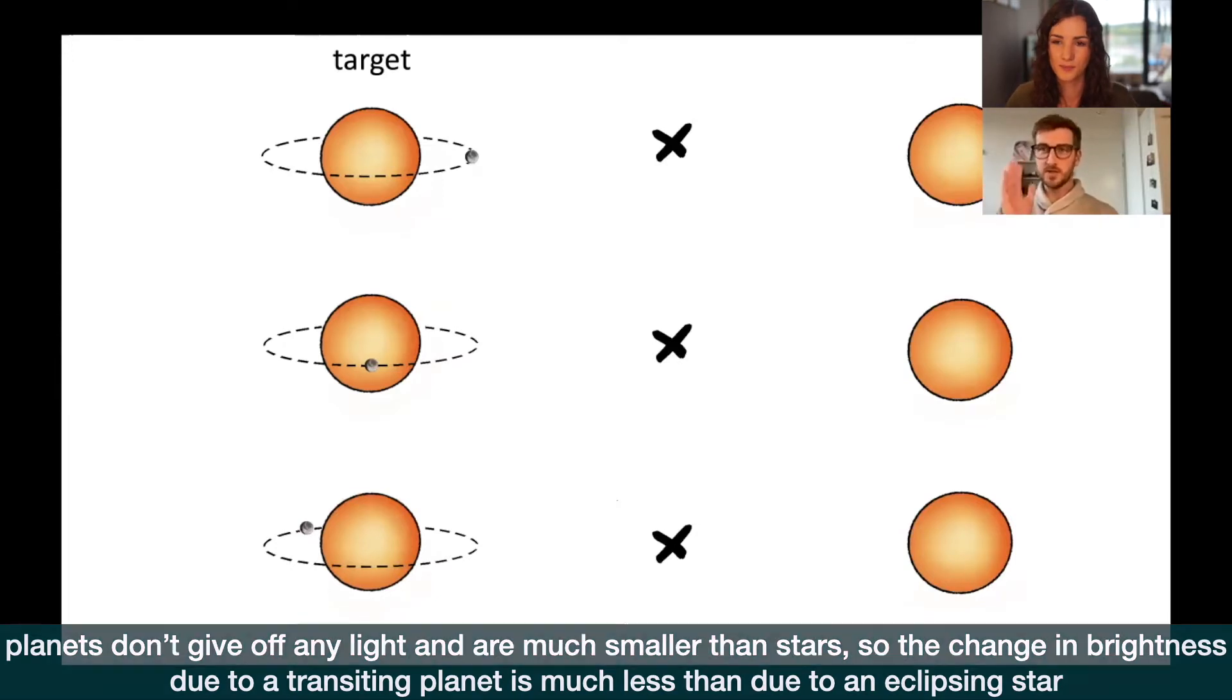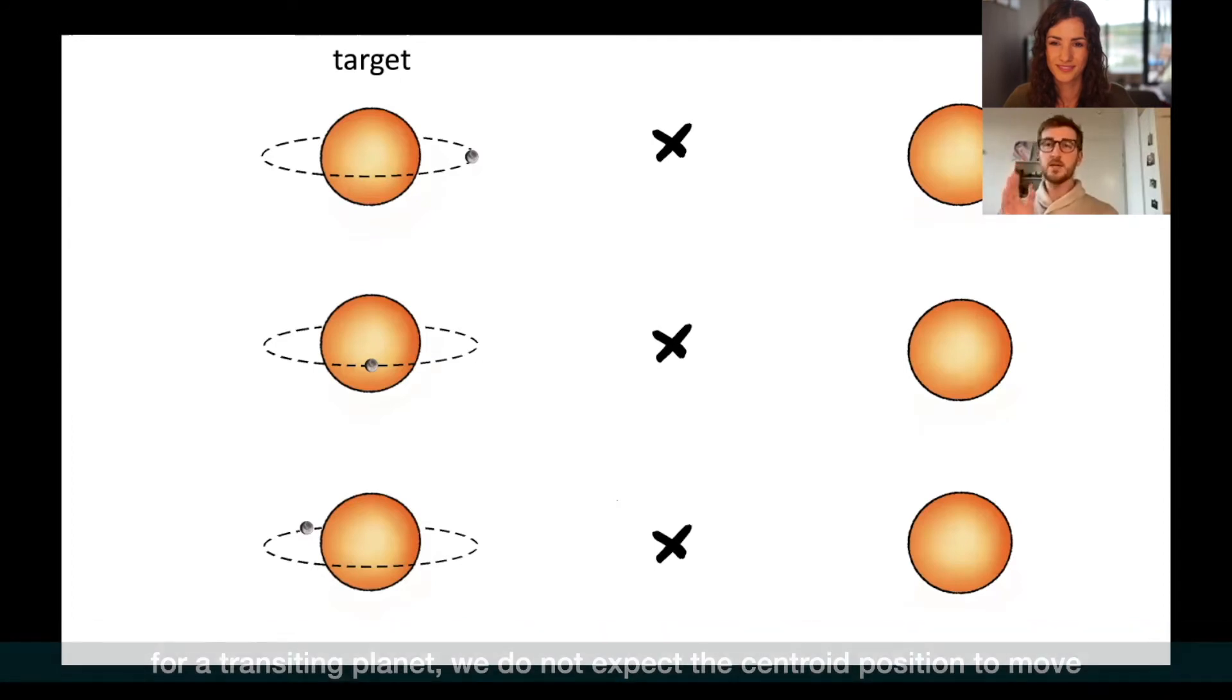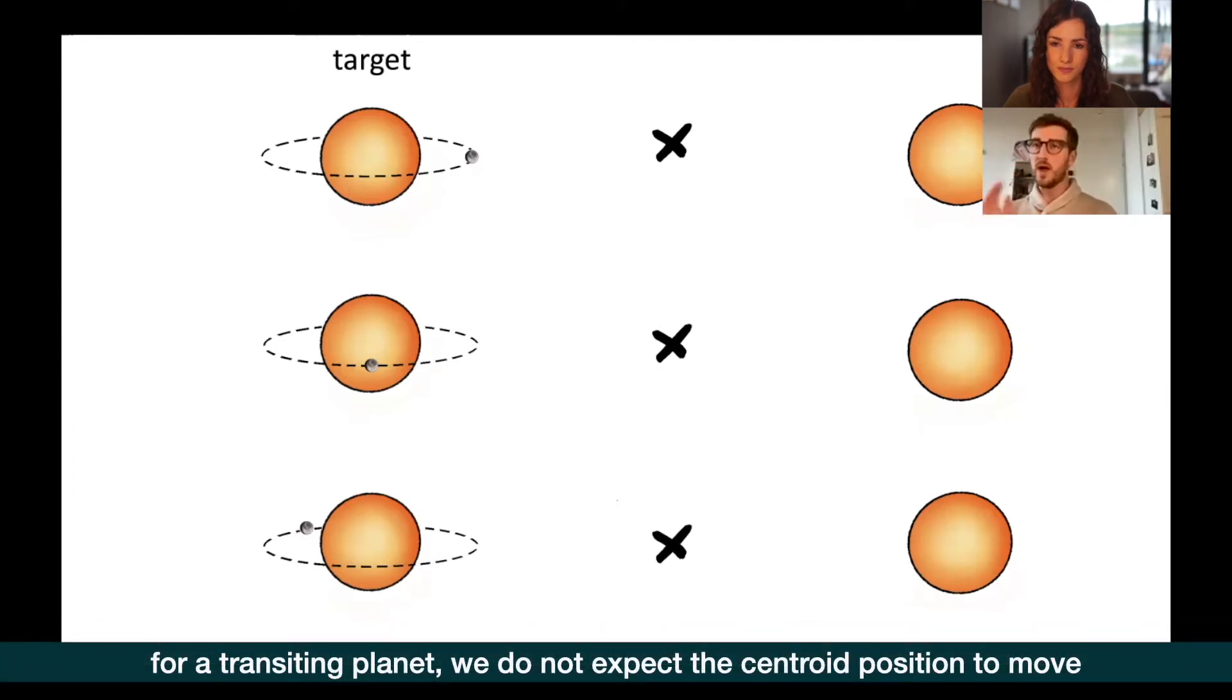So just, just to recap, in the case of this being a planet, the centroid will not shift, or at least not very much. And if you do have something like an eclipsing binary, this false positive scenario, you'll be able to tell that it's not a planet because the centroid is moving quite a bit. Yeah, that's a very concise and excellent summary. Thank you. That was also a good point that you made. So the centroid position with the planet system, it does move, but not enough for us to be able to detect it. So for all intents and purposes, we will assume that it is not moving in the planet scenario.